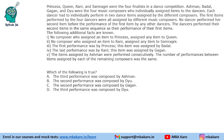There are 4 finalists in a dance competition: P, Q, R, S, and 4 composers: A, B, G, D. These people were individually assigned items to the dancers, and each dancer had to perform in 2 dance items assigned by a different composer. The first items performed by the 4 dancers were all assigned by different music composers. No dancer performed the second item before the first item performance by the other dancers. So we have 8 performances.